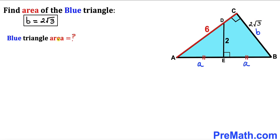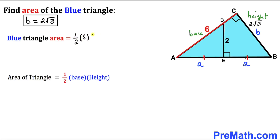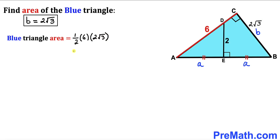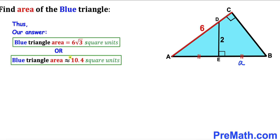For the final step, we calculate the area of triangle ABC using the formula: area equals one half times base times height. Our base is 6 and our height is 2 times square root of 3, so area equals one half times 6 times 2 root 3, which simplifies to 6 times square root of 3 square units, approximately equal to 10.4 square units. Thanks for watching and please don't forget to subscribe to my channel for more exciting videos.